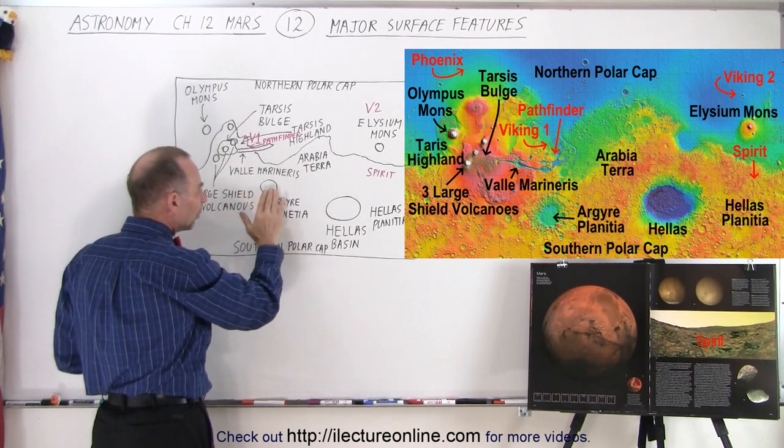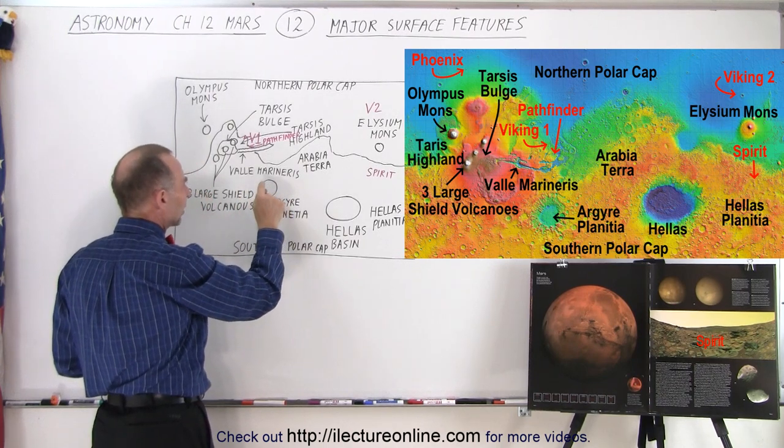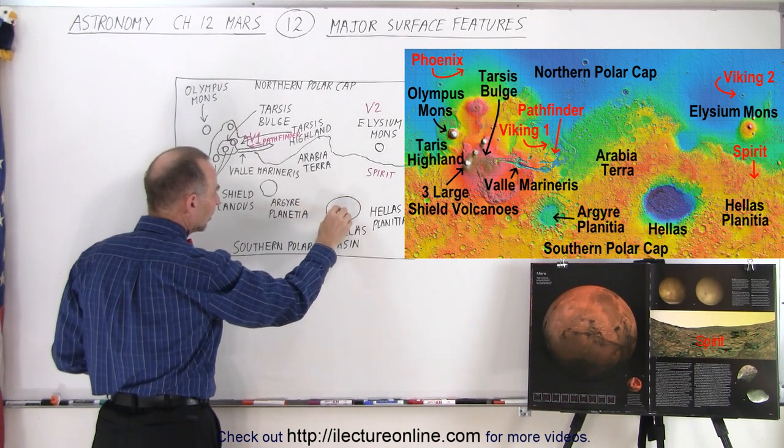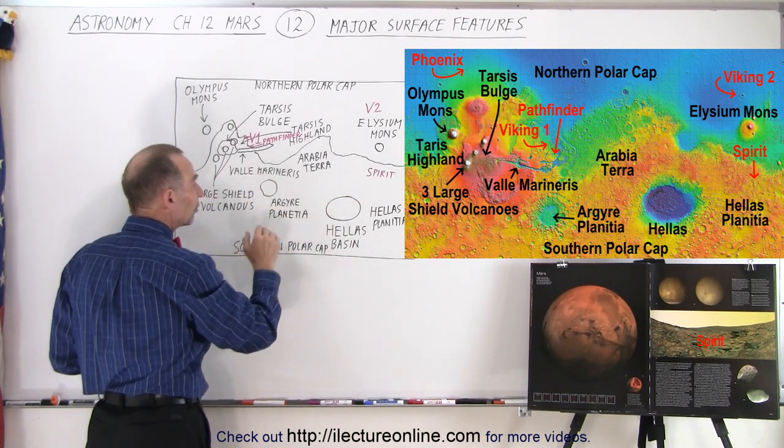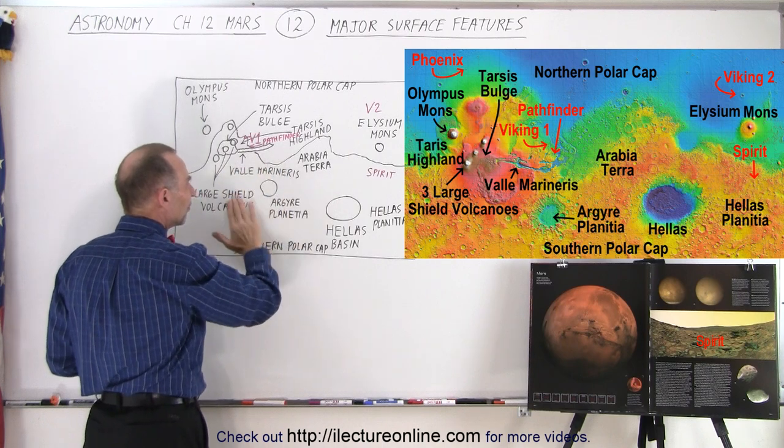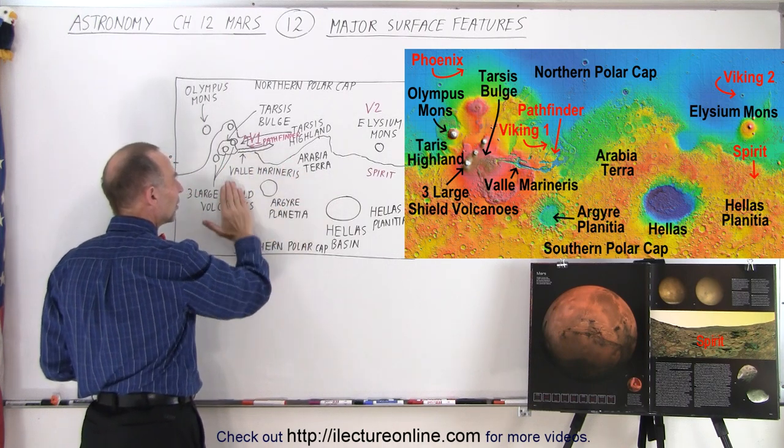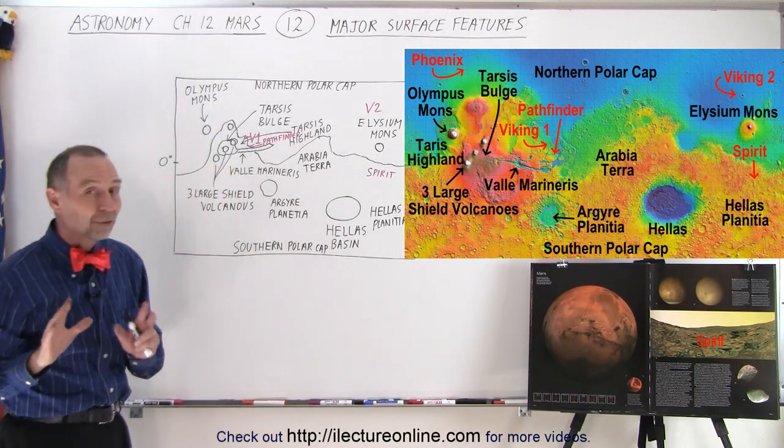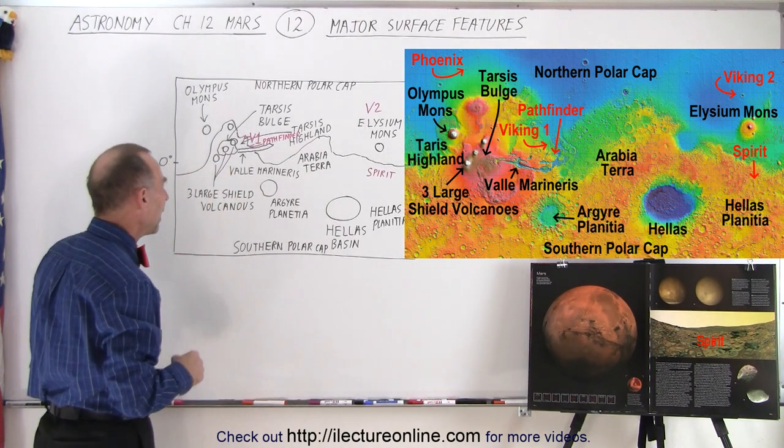Now, even though they call it a plain, this looks very much like another very large impact region, not quite as big as Hellas Basin, not quite as deep as Hellas Basin, but nevertheless, because of differentiation, all the region around it is much higher in elevation than this particular region right there. We do believe that's probably also an impact zone.